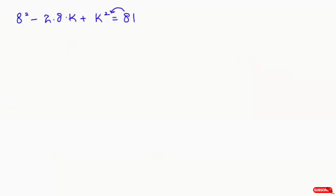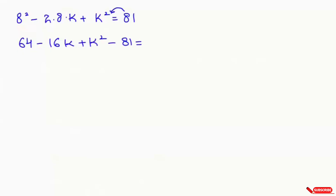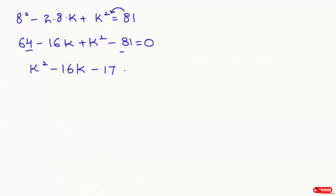Taking this to the left hand side: 8 squared equals 64, and 2 times 8 gives us 16, so we have k squared minus 16k plus 64 minus 81 equals 0. Simplifying the constant terms: 64 minus 81 gives minus 17, so we get k squared minus 16k minus 17 equals 0.